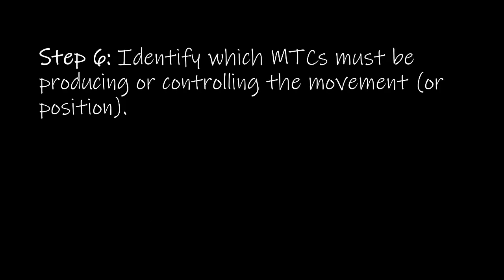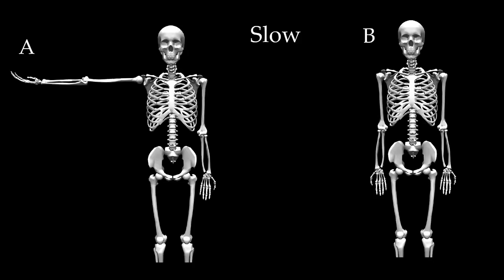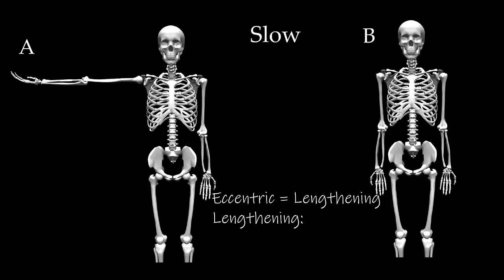In Step 6, we put it all together to identify which MTCs must be producing or controlling the movement or position. As we go from A to B slowly, we identified the MTC action as eccentric. With eccentric MTC actions, the MTCs that are lengthening are controlling the movement. The MTCs lengthening are those on the lateral side of the joint — the glenohumeral abductors.